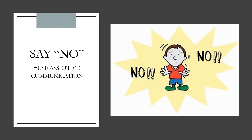The next strategy is to say no. There are several ways you can say no: no thanks, no way, not interested — just say no. Remember when we talked about assertive communication? We want to make sure you're using assertive communication when you refuse peer pressure. When you say no, you want to be confident. Stand tall, look them in the eye, and speak up to show your confidence.